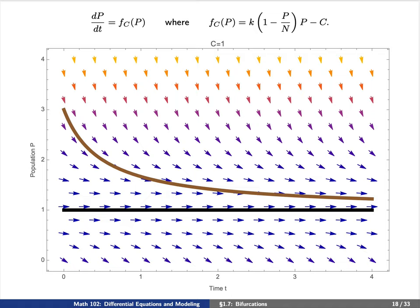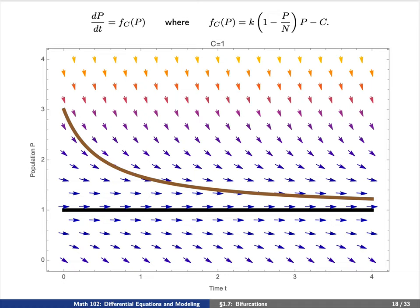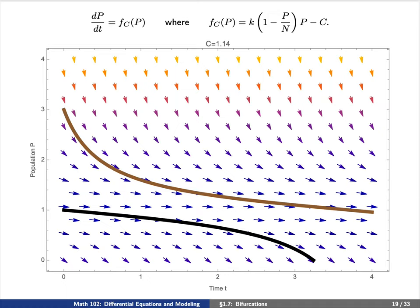Let's increase C further from 1 to 1.14. Now the black line, which went from increasing to flat, is actually decreasing in population. Something similar is happening with the brown line just above it. Going back to C = 1, our lines seem to be approaching something flat, but increasing to C = 1.14, all solutions seem to be decreasing to 0. This is a completely different behavior now that we've increased our value of C.